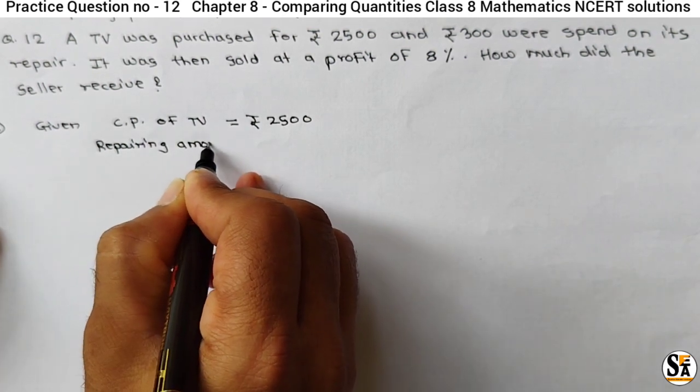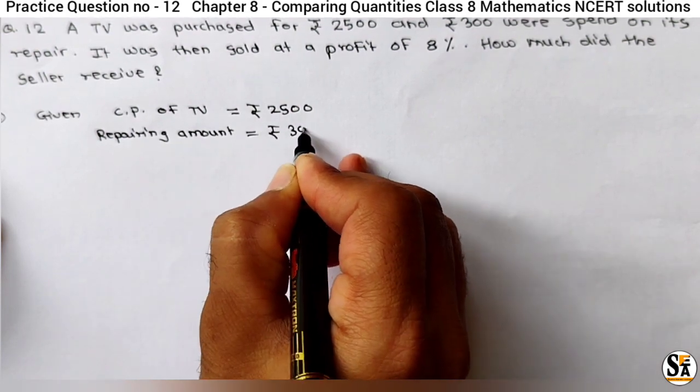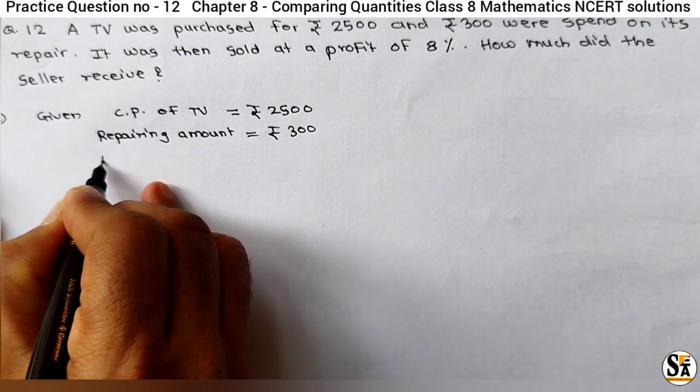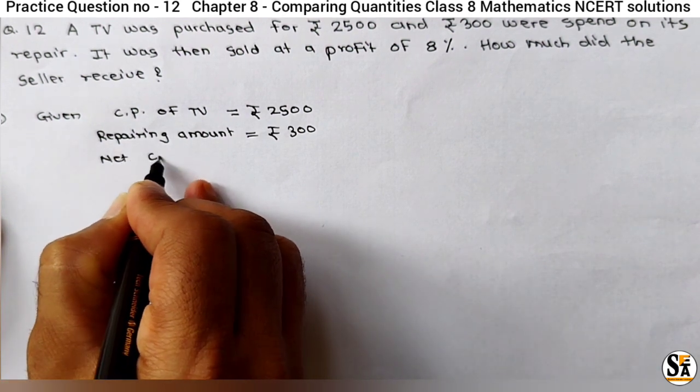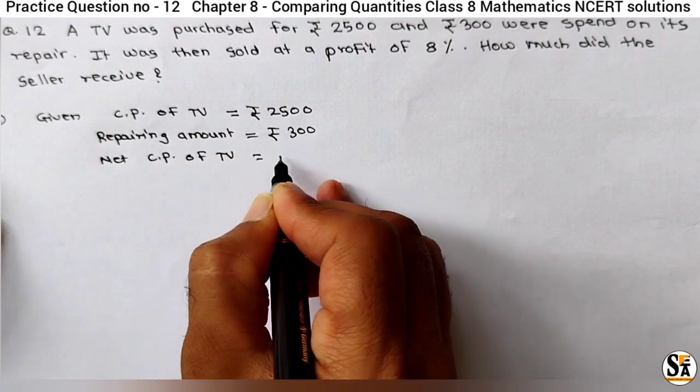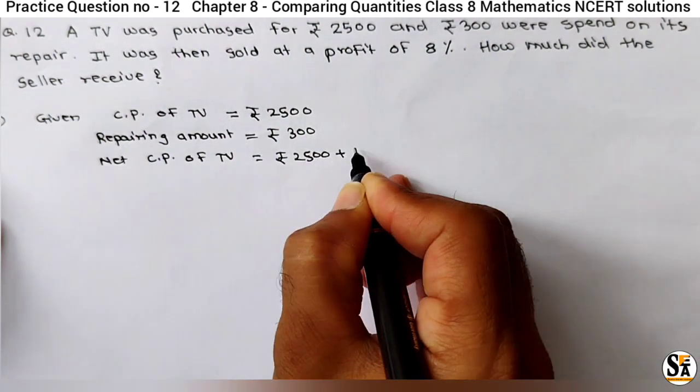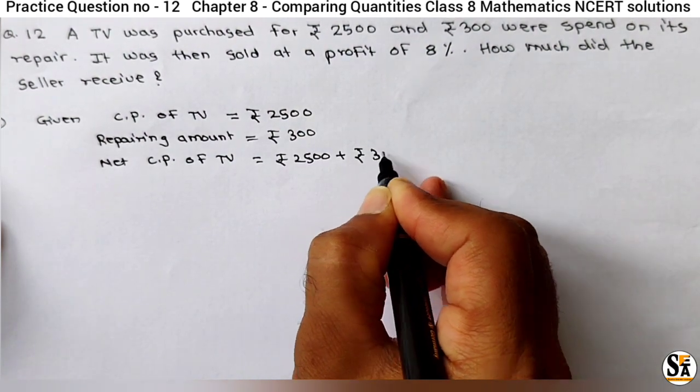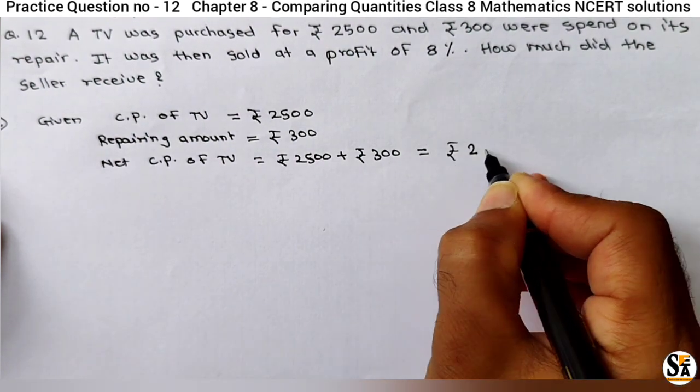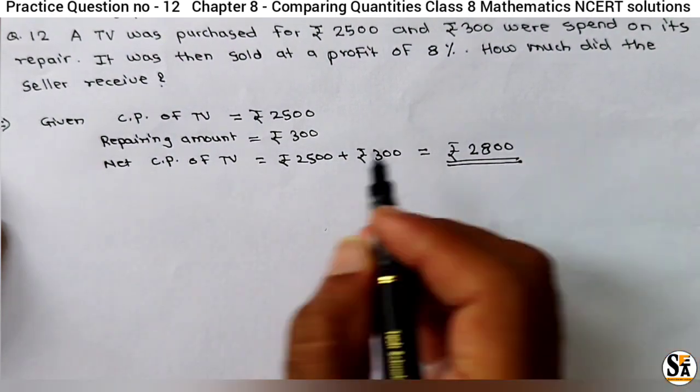So repairing amount is equal to Rs 300. So what is total, means what is net CP? Here net CP of TV is equal to this original 2500 plus repairing cost Rs 300. That will be equal to Rs 2800. So this is net cost price of this TV.